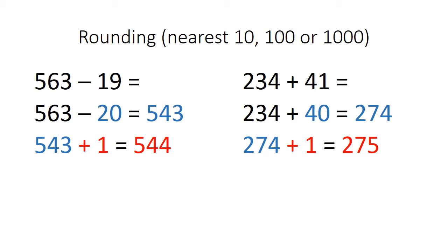In my head I would do 563 take away 20 which is 543. Then I would add the extra one on because I'm not taking away 20, I am taking away 19. So my final answer is 544.